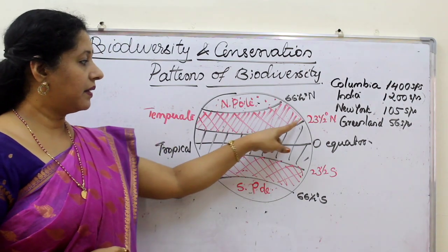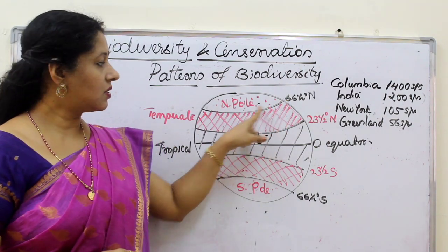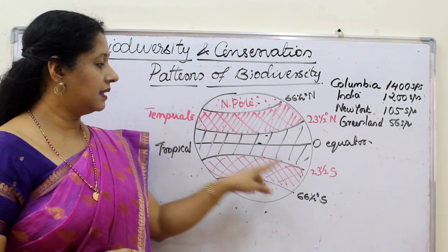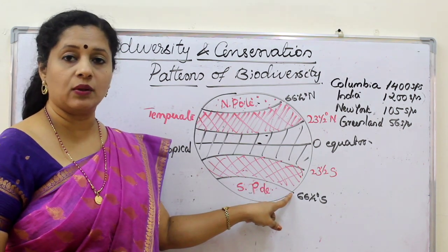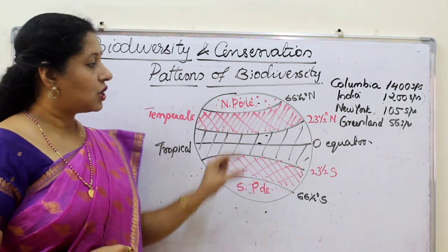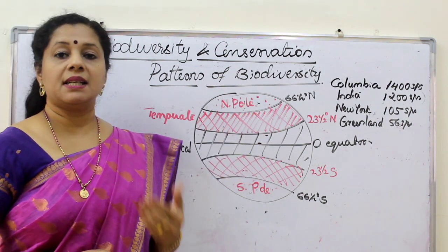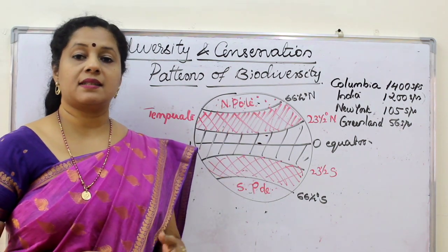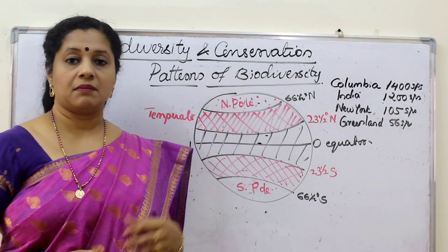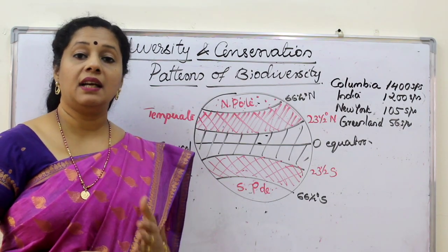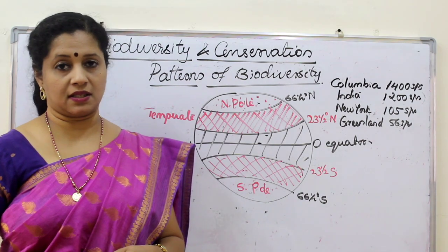Whereas, when we go from 23 to 66.5 degree north, this is called the Arctic Circle, and 66.5 degree south is called the Antarctic Circle. This region is called the temperate zone. The temperate zone has got less light intensity, low temperature, and very clear-cut, extreme seasons.